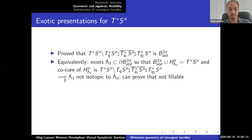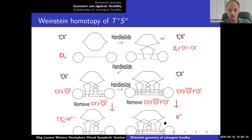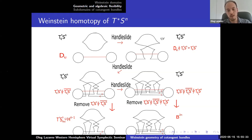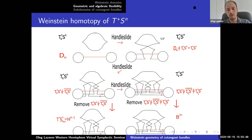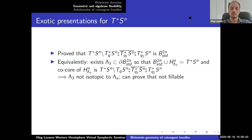Let me go back and say what lambda_3 is precisely. In this picture, the red Legendrian in the middle row of the right column looks very standard, but after identifying the black Legendrian with the handle attached to the standard ball — when you cancel all those handles — this red Legendrian becomes something very non-standard. So even though it looks standard in this picture, it is a non-standard Legendrian. And it's not Lagrangian fillable.